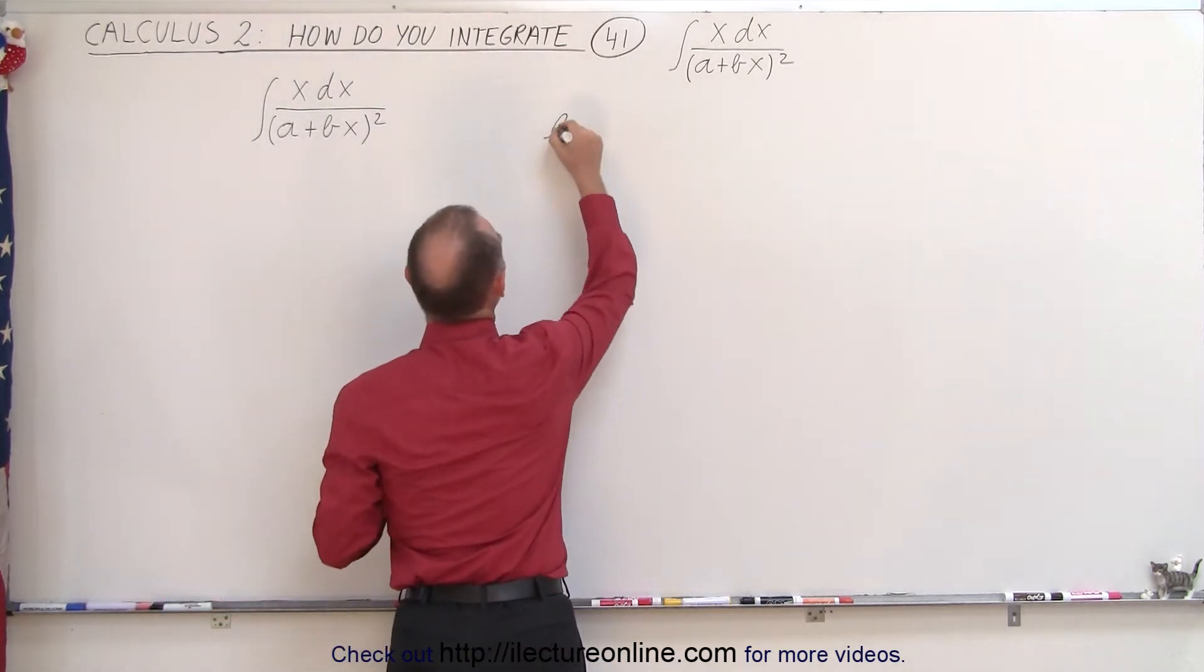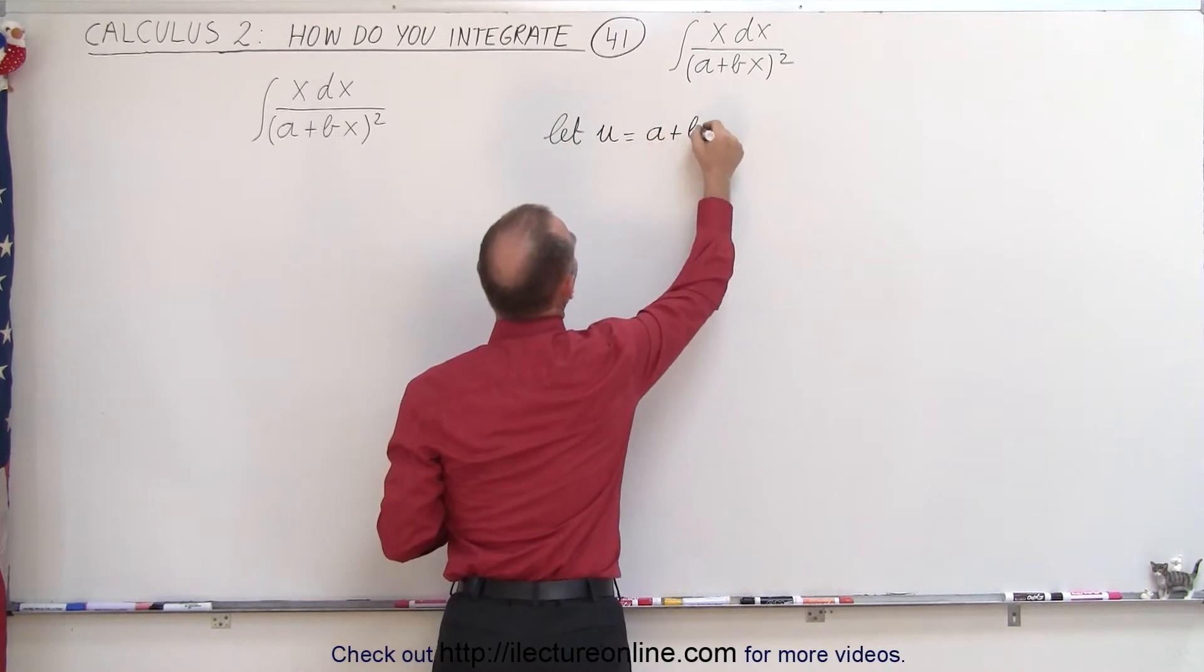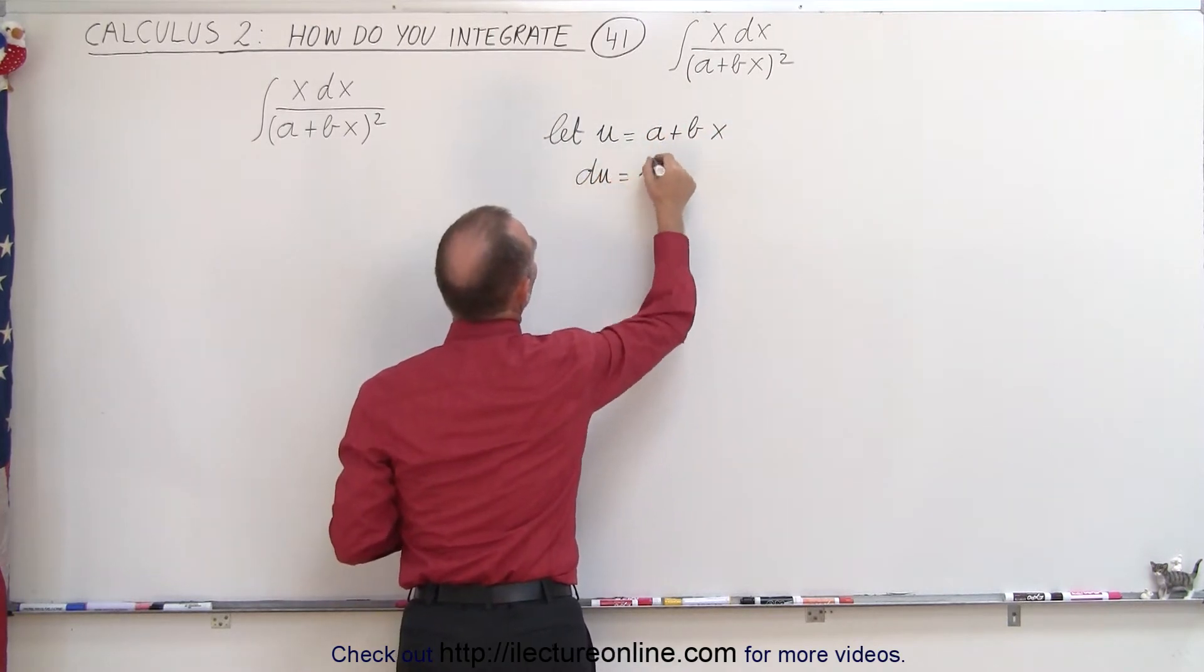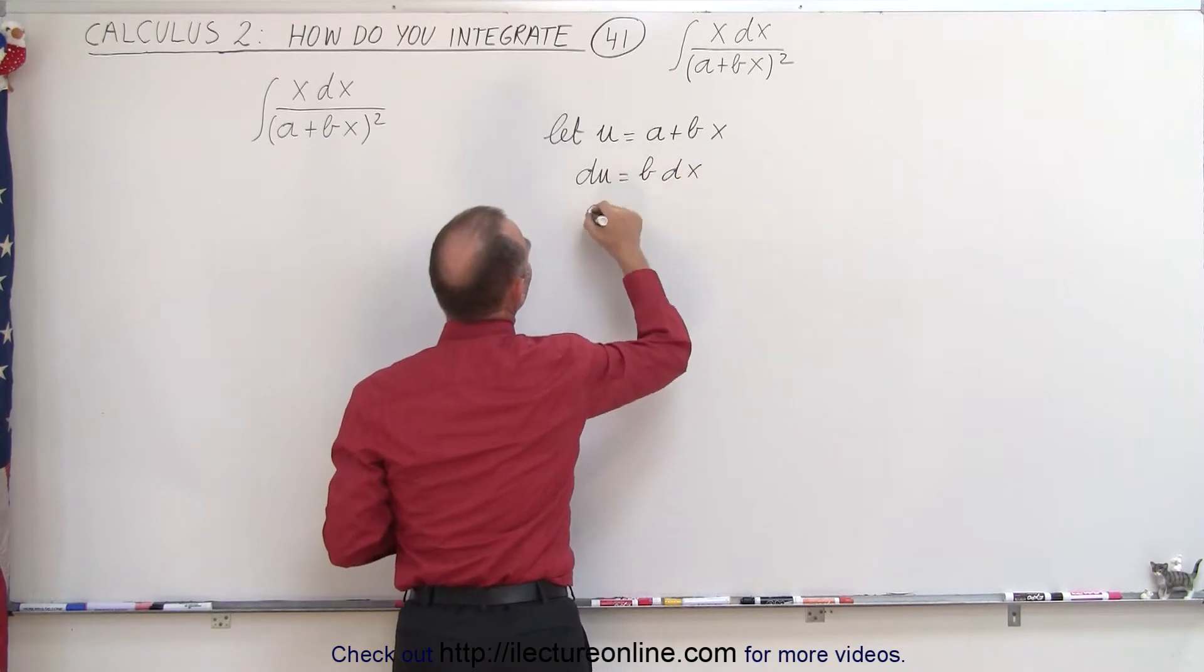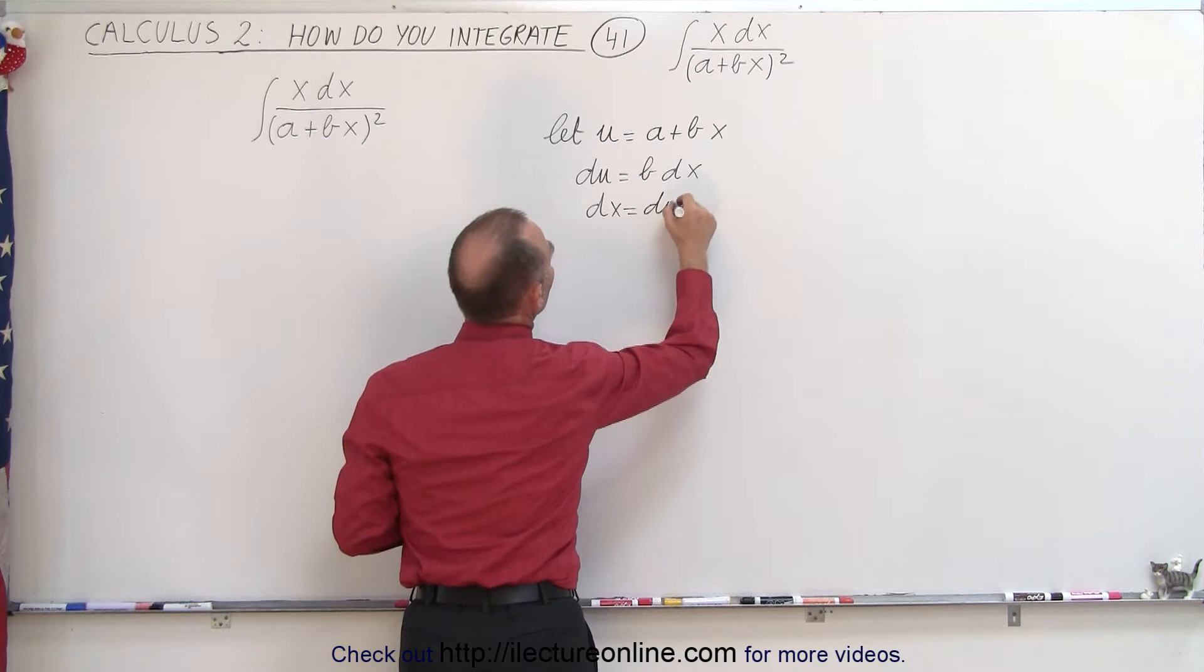We're going to let u equals a plus bx which means that du is equal to b dx and dx is equal to du divided by b.